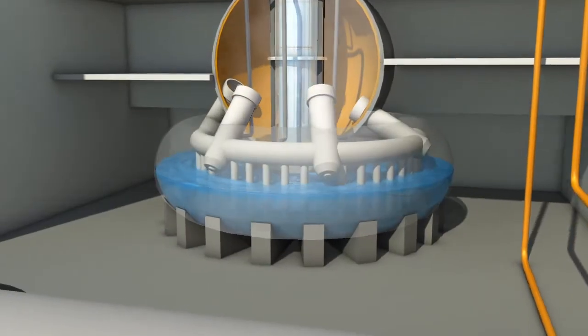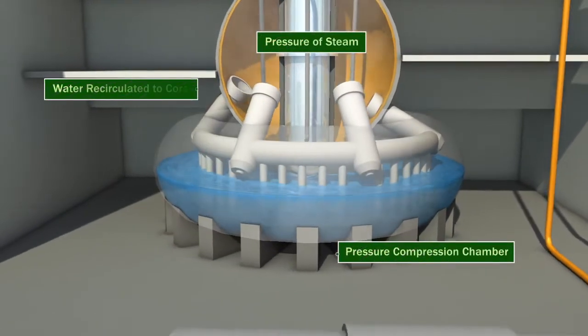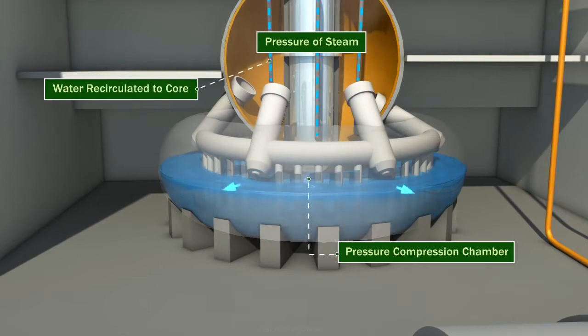The pressure compression chamber regulates the amount of steam and suppresses the pressure in the reactor vessel. It is a safety feature that prevents the reactor from exploding.